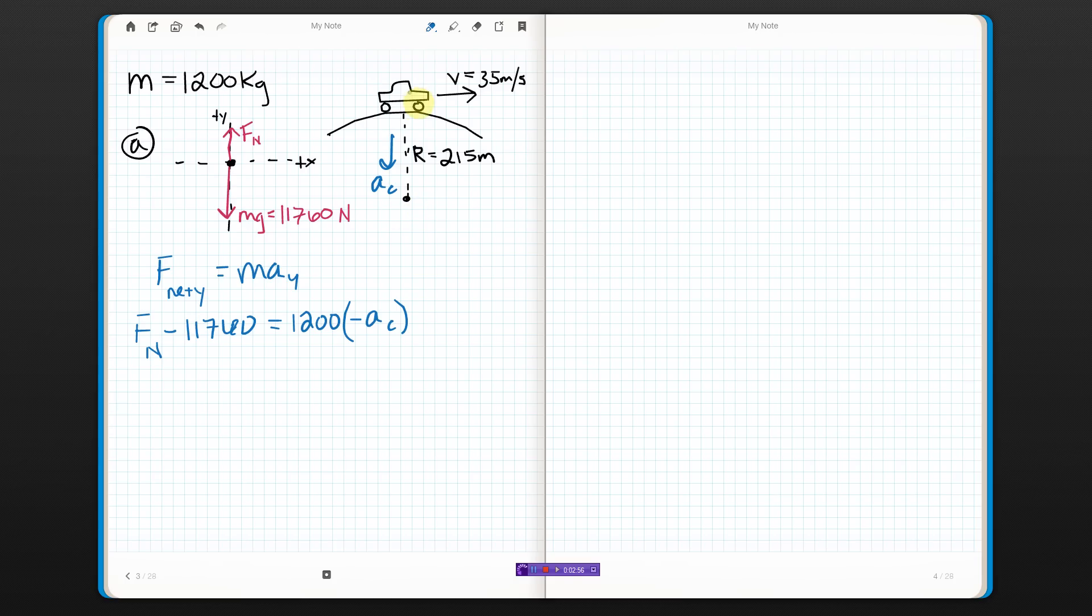So really a_y becomes negative a_c, negative because the direction is always to the center of the circle, and it just so happens that for this car the center of the circle is down, which we have defined as the negative direction.